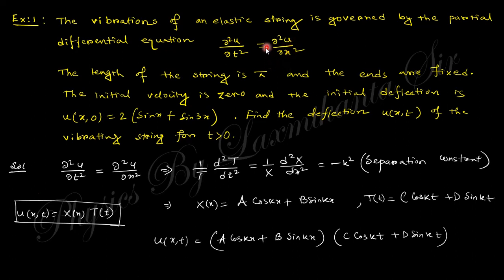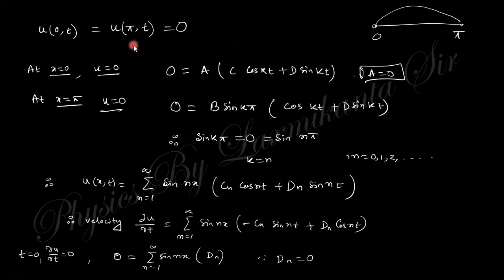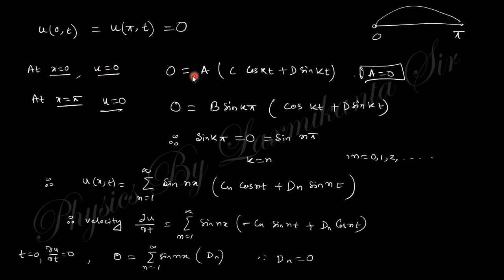The length of the string is pi, the ends are fixed, the initial velocity is zero, and the initial deflection is given as a function. We need to find the deflection at any time. Writing the differential equation with v = 1 and applying separation of variables gives two ODEs. Using boundary conditions at x = 0 and x = pi (both y = 0), we get k = n, so the eigenfunctions are sin(n*x).